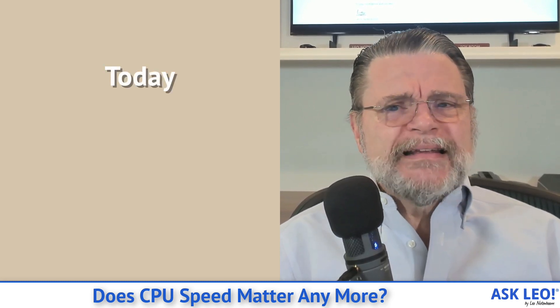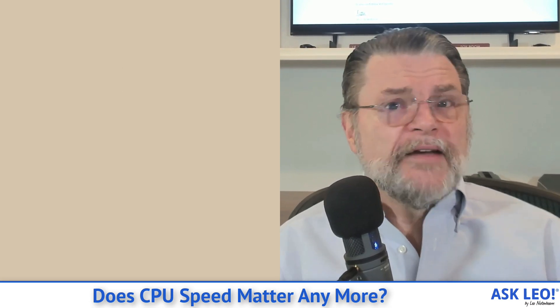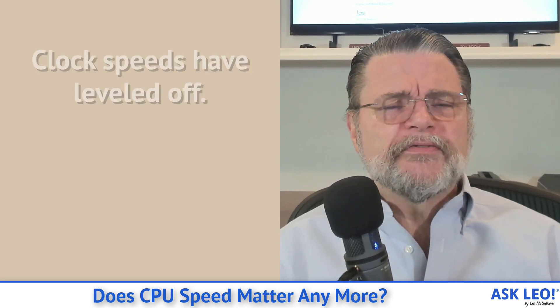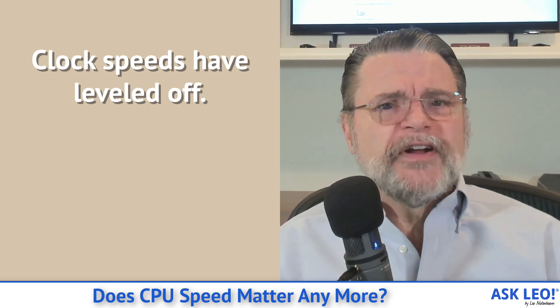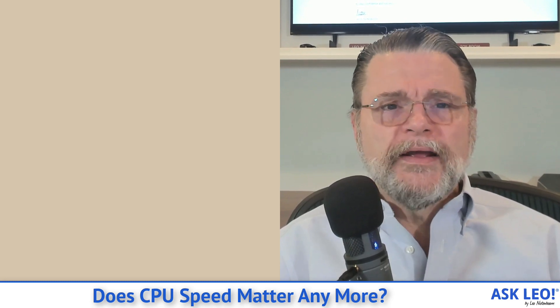These days, things are a little bit different. For one thing, clock speeds, at least from what I've seen, kind of sort of leveled off. On average, I'd say they're usually right around the 3.2 gigahertz range. But again, it's a wide range.